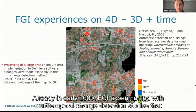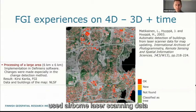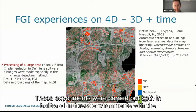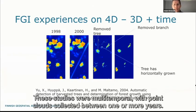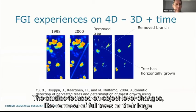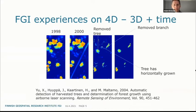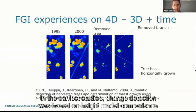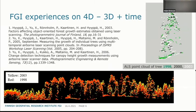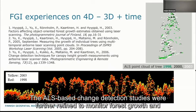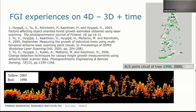Already in early 2000, FGI experimented with multi-temporal change detection studies using airborne laser scanning data, carried out in both built and forest environments with the goal of automating change detection. These were multi-temporal studies with point clouds collected between one or more years, focused on object-level changes like removal of full trees or large branches. In the earliest studies, change detection was based on height model comparisons. The ALS-based change detection studies were further refined to monitor forest growth and assist growth dynamics.